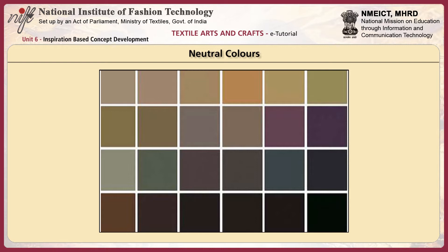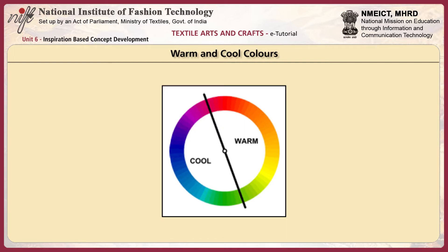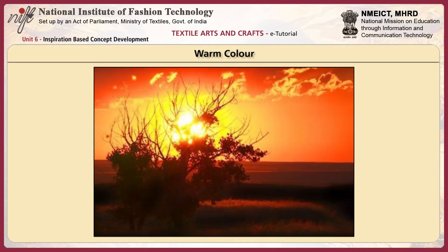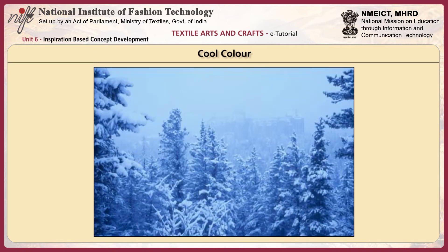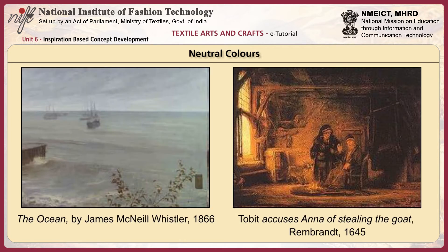The color circle can be divided into warm and cool colors. Warm colors are vivid and energetic and tend to advance in space, while cool colors give an impression of calm and create a soothing impression. White, black and gray are considered to be neutral. Neutral colors such as beige, ivory, taupe, black, gray and white appear to be without color, yet in many applications these hues often have undertones of colors.